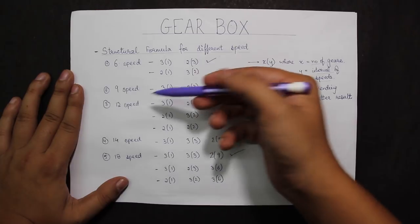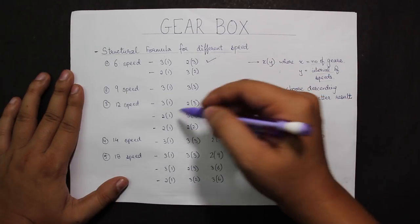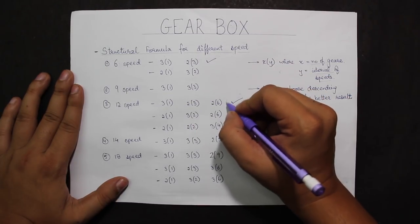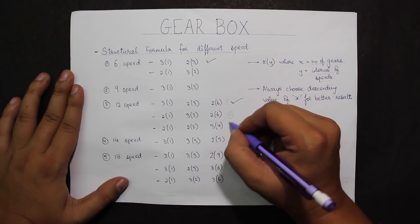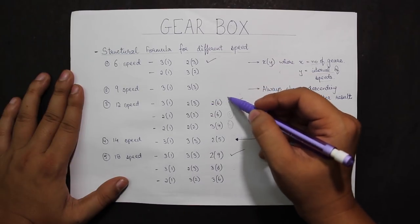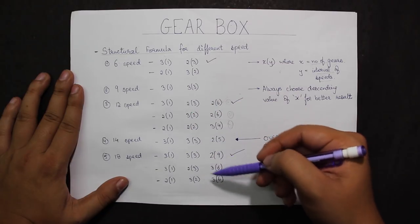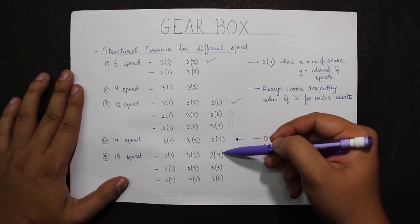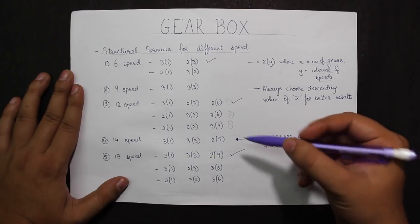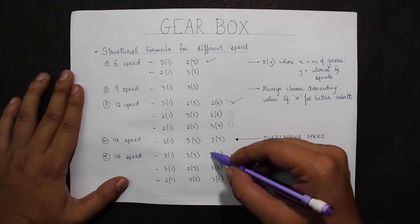For 12-speed, I can achieve this ratio by three different combinations: 3 into 2 equals 6, 6 into 2 equals 12. Similarly, for 18-speed, I have three different combinations: 3 into 3 equals 9, 9 into 2 equals 18. The number outside the bracket is the number of gears.